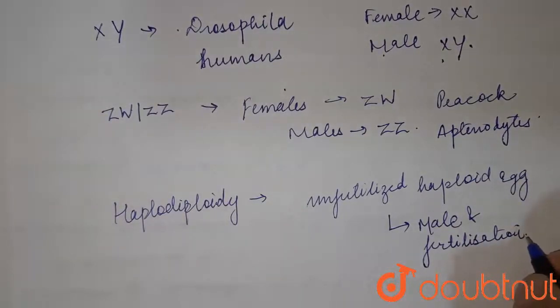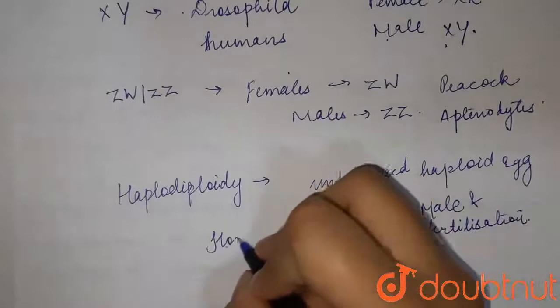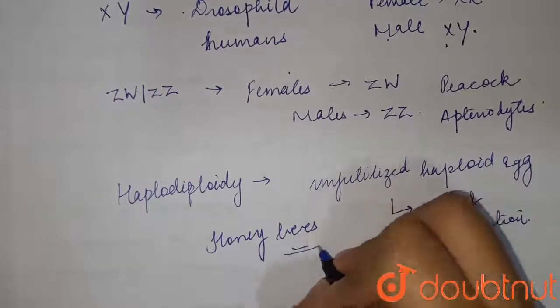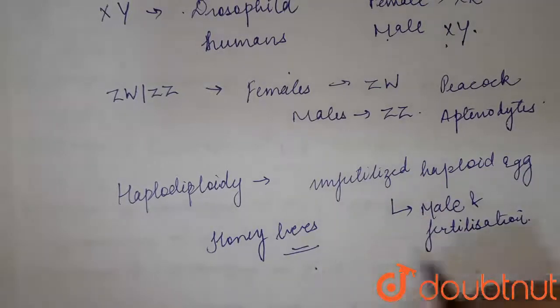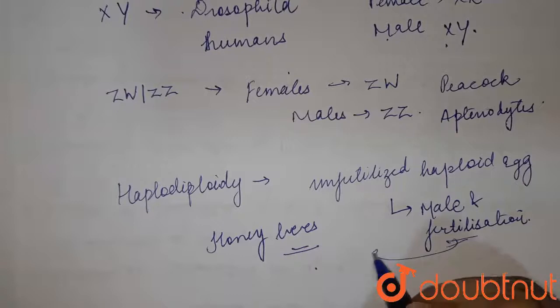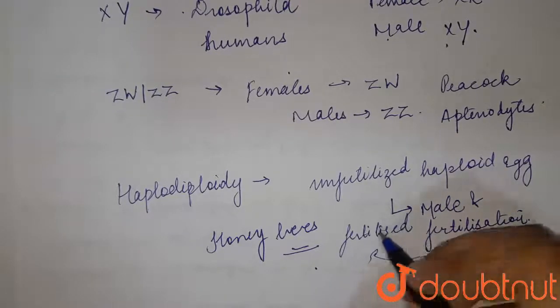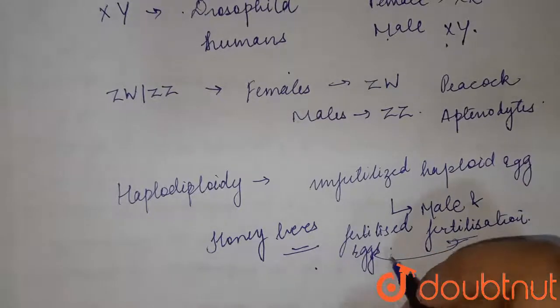It is found in honeybees and Apis. The new queen bee and female workers develop from fertilized eggs and are therefore diploid. So if you look at the options given to us, from option A you can see that XO is seen in insects.